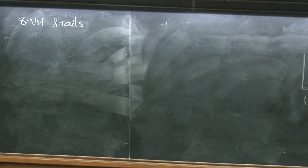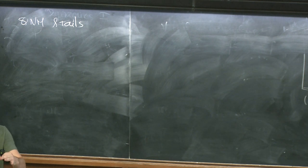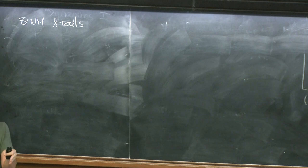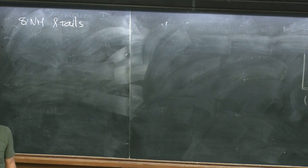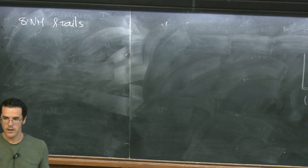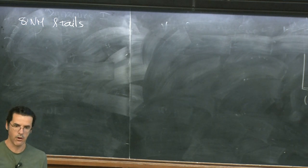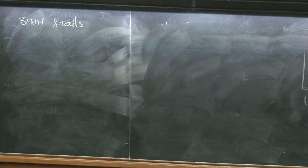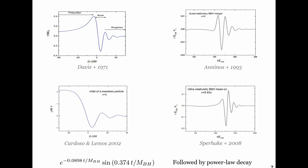This is where quasi-normal modes and tails come in. Curved spacetime is very special: in Minkowski, the Green's function has delta functions in 3+1 dimensions, and everything travels on the light cone. In curved spacetime, things travel inside the light cone because of curvature — you have backscattering off the spacetime curvature, waves can reach receivers at later times. The signal doesn't die off immediately as it does in Minkowski. The question is: is this because of spacetime curvature at large distances, or is it because we have horizons?